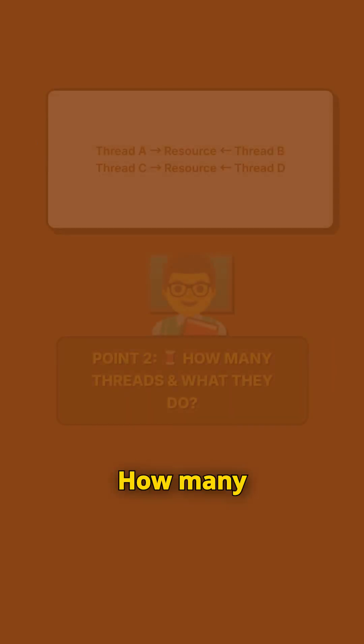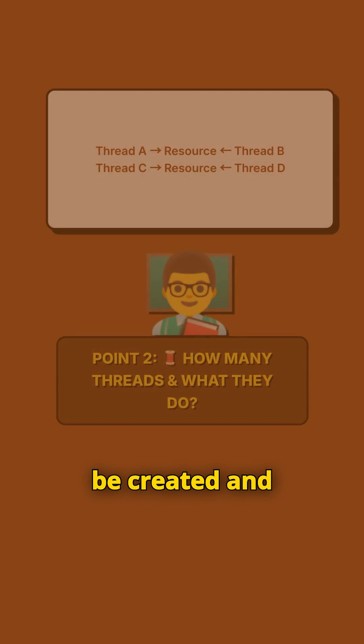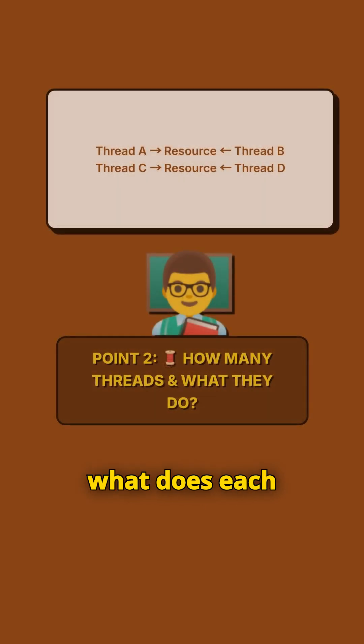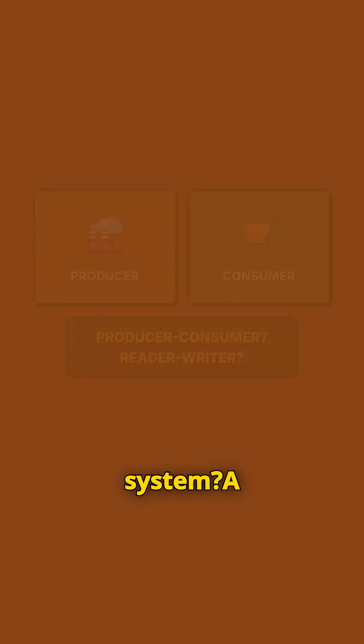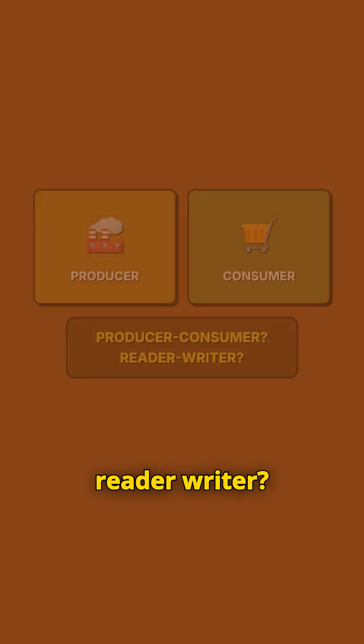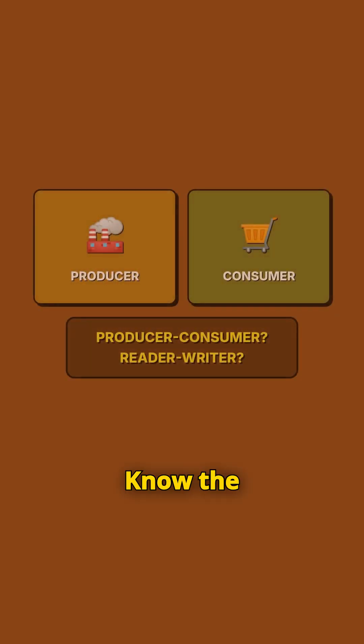Point 2: How many threads will be created, and what does each one do? Are you building a producer-consumer system? A reader-writer? Know the thread roles.